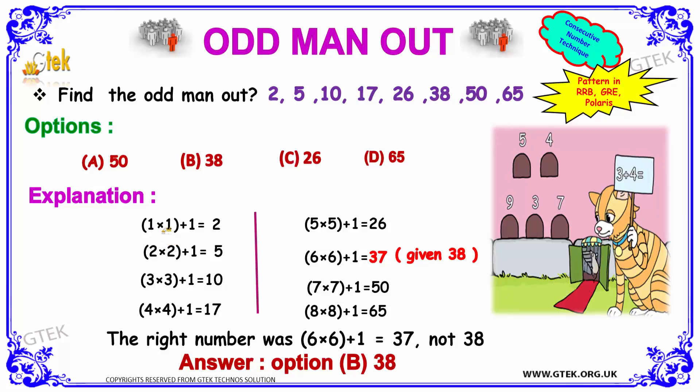So, 1 into 1 plus 1. That's 1 plus 1 is equal to 2. 2 into 2 plus 1 is equal to 5. 3 into 3 plus 1 is 10. Yes, that's what we got. 2, 5, 10. Good.